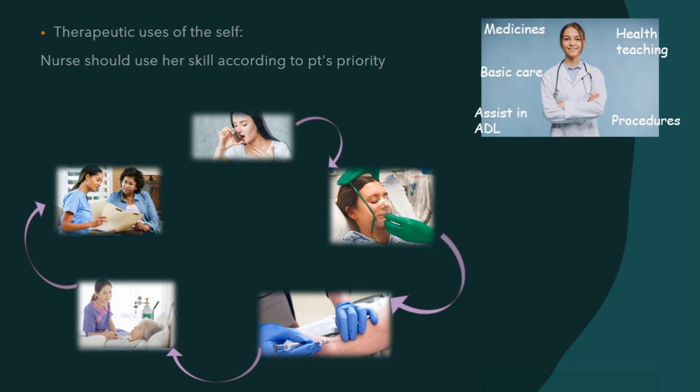Nursing procedure is the final skill. All kinds of treatment involve some nursing procedures, so a nurse should be skilled in the nursing procedures involved in a treatment course. These were the 11 skills needed in a nurse to develop a treatment plan.